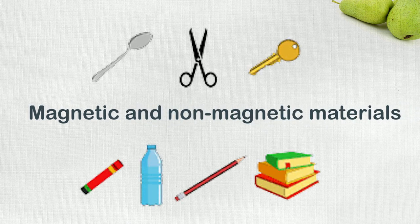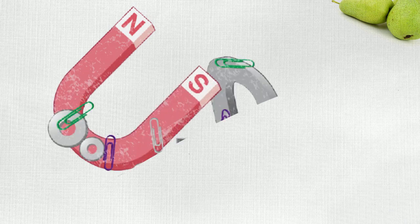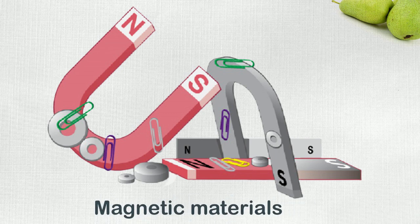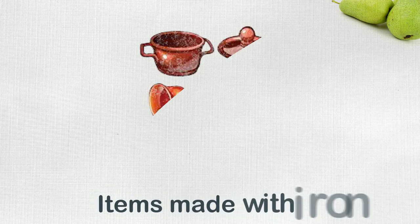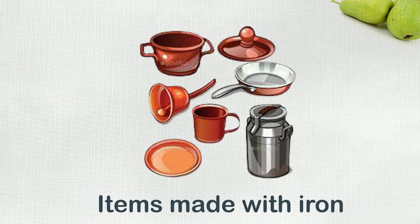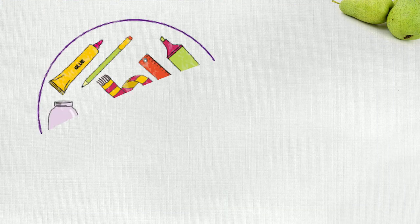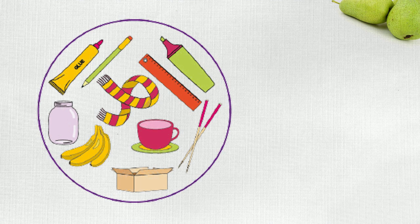Magnetic and non-magnetic materials: the objects which get attracted to magnet are known as magnetic materials, such as those items made with iron, cobalt, and nickel.